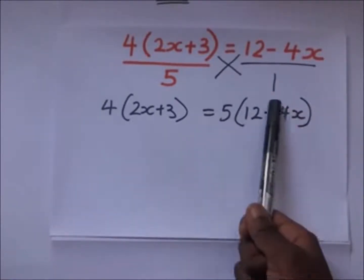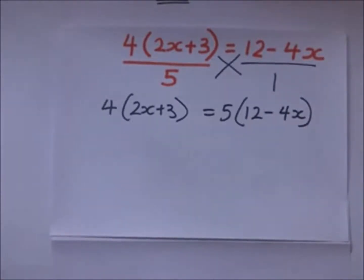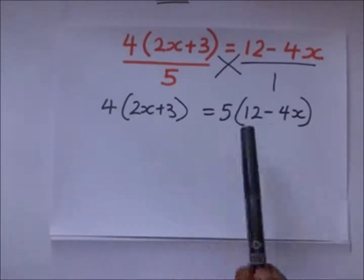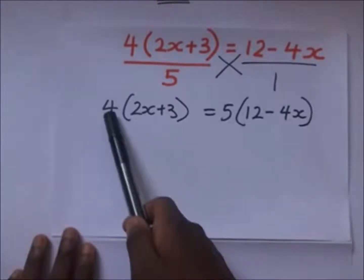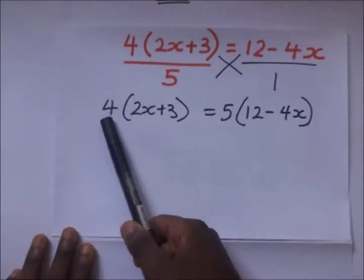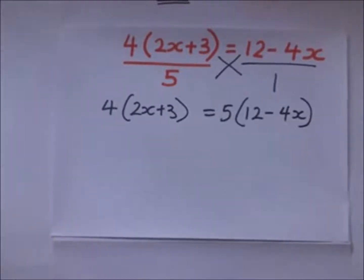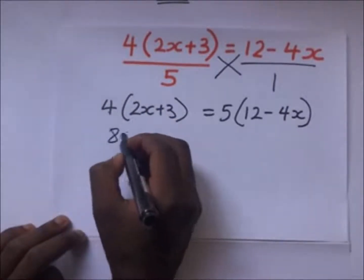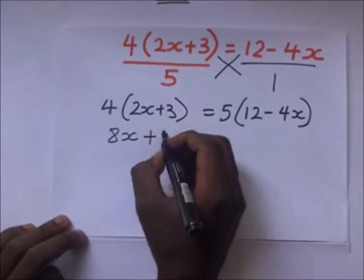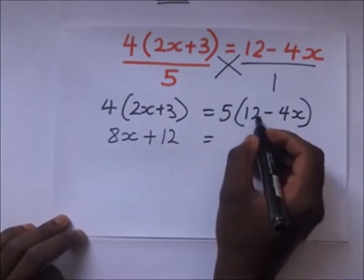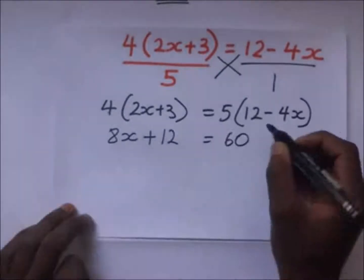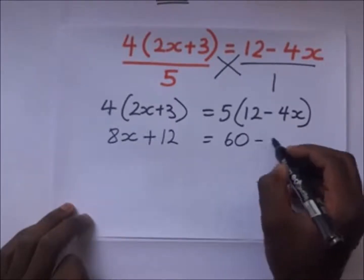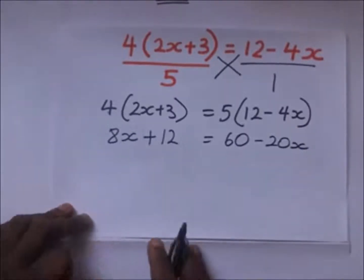To continue from here, we need to first open these brackets. Opening brackets means we multiply the term outside the bracket by everything inside. So 4 times 2 gives 8x, plus 4 times 3 gives 12, equals 5 times 12 which is 60, then 5 times negative 4x gives negative 20x.